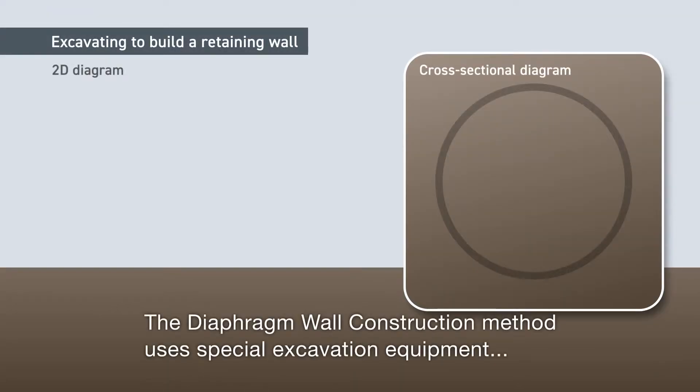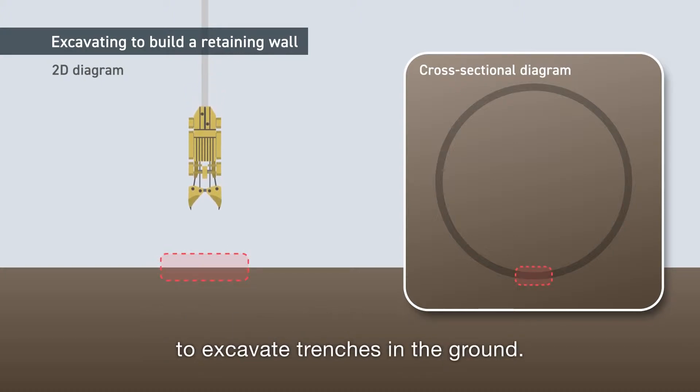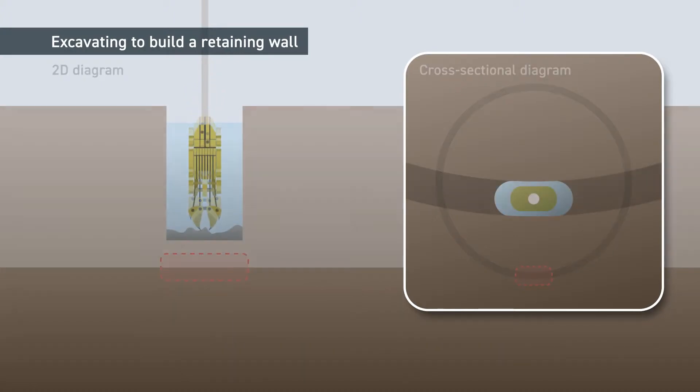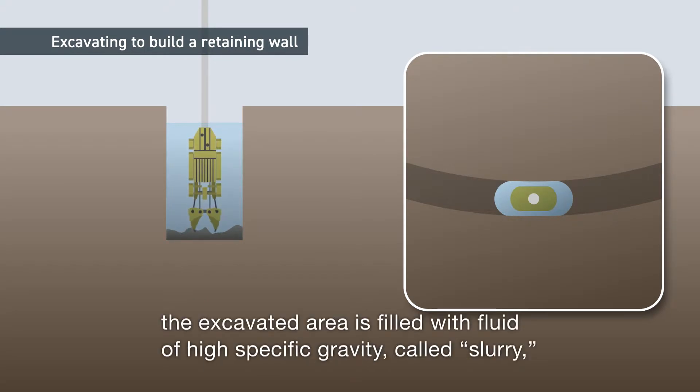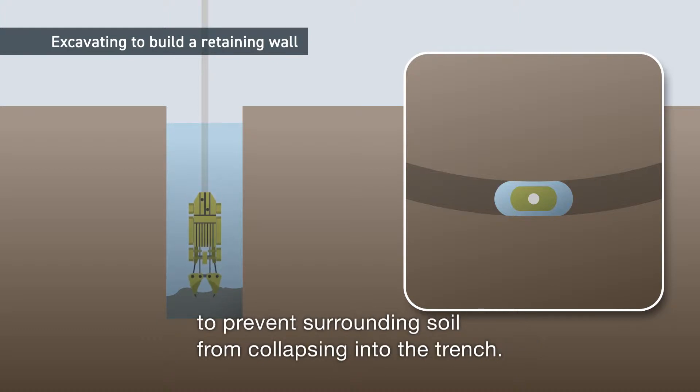The diaphragm wall construction method uses special excavation equipment to excavate trenches in the ground. In the excavation process, the excavated area is filled with fluid of high specific gravity, called slurry, to prevent surrounding soil from collapsing into the trench.